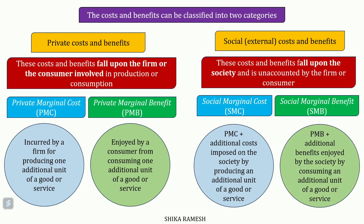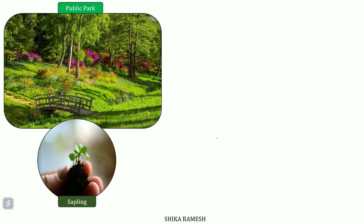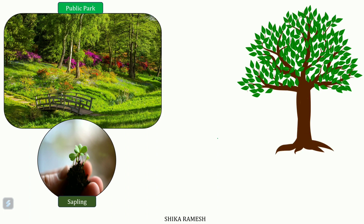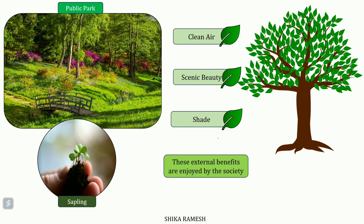Social marginal benefit includes private marginal benefit and any additional benefits enjoyed by the society from producing or consuming an additional unit of a good or service. Suppose there is a public park in the town with lots of trees. If one more plant sapling is planted, it will eventually grow into a big tree and provide benefits such as cleaner air, scenic beauty, and shade to the visitors. These external benefits are enjoyed by the society as a whole and are an example of social marginal benefit.